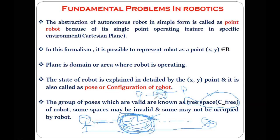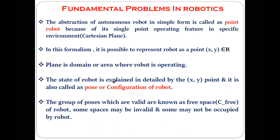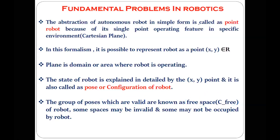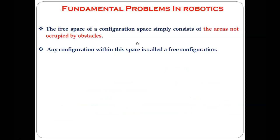If there is nothing present on the robot's way, then every area is considered as free space. That is the reason the positions which are valid — only those are considered as free space. If the free space is not there, then we cannot say that particular position is a valid position for the robot. There can be a valid position, an invalid position, a position occupied by the robot, or not occupied by the robot. The free space configuration of the robot simply consists of the area which is not occupied by any kind of obstacle — that particular space is considered as free space for the robot. Any configuration within this is also considered a free configuration for the robot.